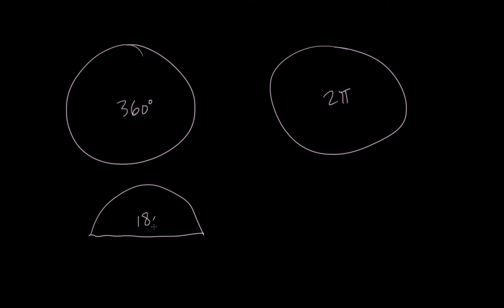Now, half a circle is 180 degrees, and so half a circle, if we cut this in half, is just π. So this is actually the key to our conversion.